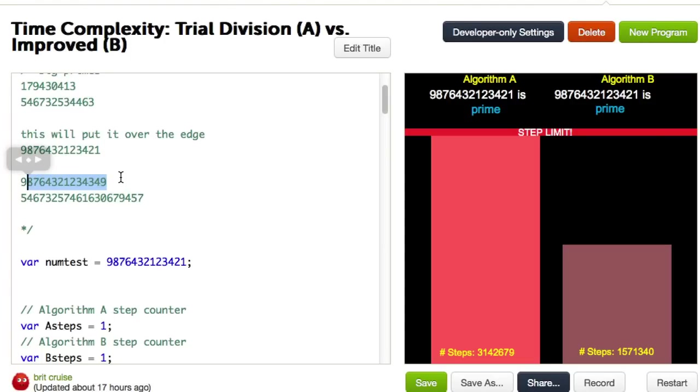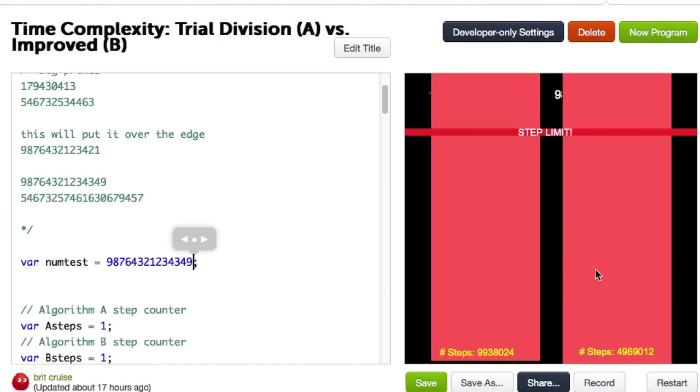And when I put this 12... I think this is a 12-digit prime into our algorithm. Let's see what happens. It's lagging. Maybe it's going to crash. Look what happened. Both algorithms went way overboard. So it didn't work.